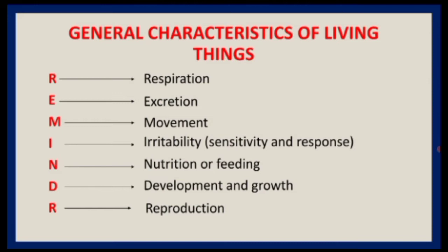Movement refers to the moving of cell contents or parts of the body. Living things — plants and animals — both move. The movement of plants is not obvious as they are generally fixed in the soil, but they extend the tips of their roots and stems. A few unicellular water plants show active movement. Animals move about freely in search of food, shelter, or to escape danger.